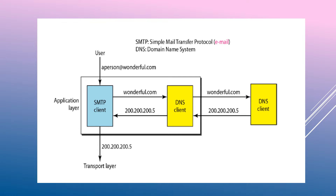This example illustrates the general structure of the DNS system. There is a DNS client-server program module showing a simple structure: an SMTP client, a DNS client, and another DNS client for a mailing application. A user of an email program may know the email address of the receiver, but the IP protocol needs the IP address. The DNS client program sends a request to the DNS server to map the email address to the corresponding IP address.